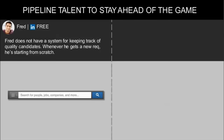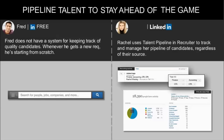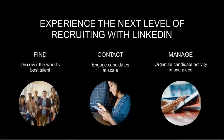The final stage in this step is talent pipelining. Fred does not have a system for keeping track of quality candidates — whenever he gets a new request, he is starting from scratch. Whereas Rachel uses talent pipeline in Recruiter to track and manage her pipeline of candidates, regardless of their source. Talent pipelining features help you track where your leads are initially coming from, what their status is in the sourcing process, and filter them by tags.